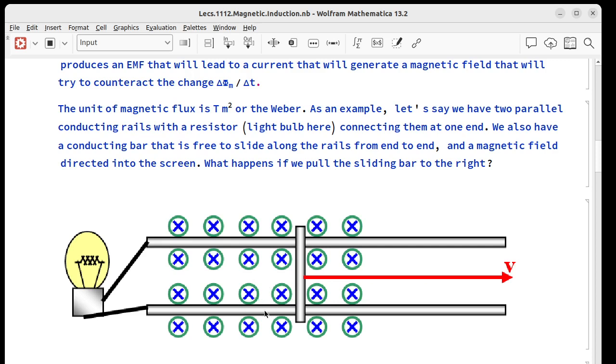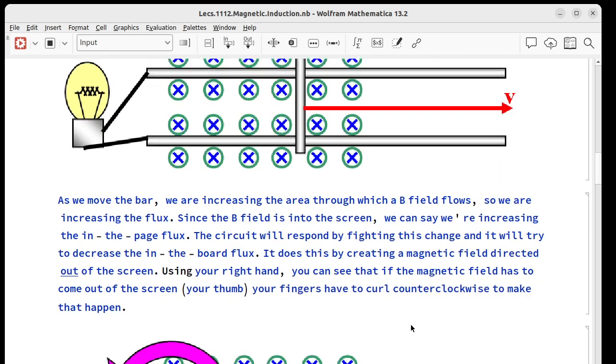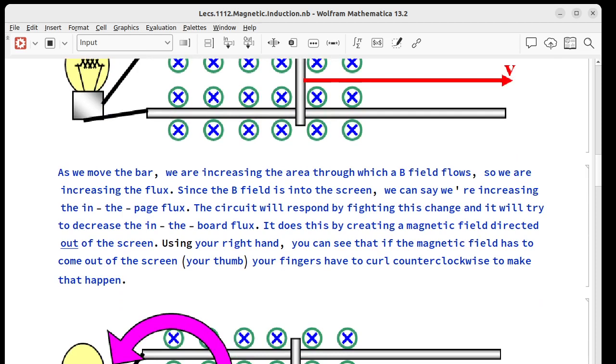Lenz's law says the circuit is going to respond by trying to fight that change and it's going to try and decrease the in-the-board flux. The way to do this is to get a magnetic field coming out of the page. So take your right hand, hold it up in front of you. If your thumb points towards your face out of the page, your fingers curl around this way. So this says we're going to have a counterclockwise current produced when we pull this bar to the side like this. This is our induced EMF and it drives an induced current.